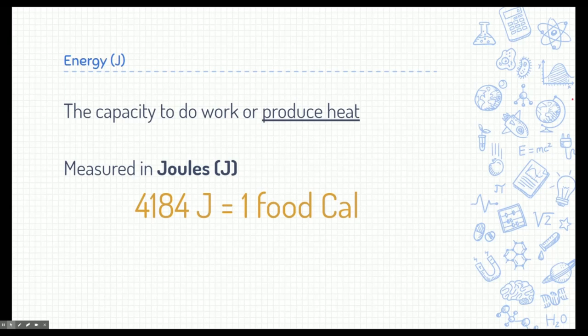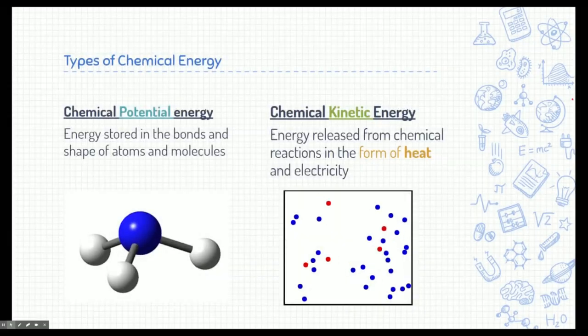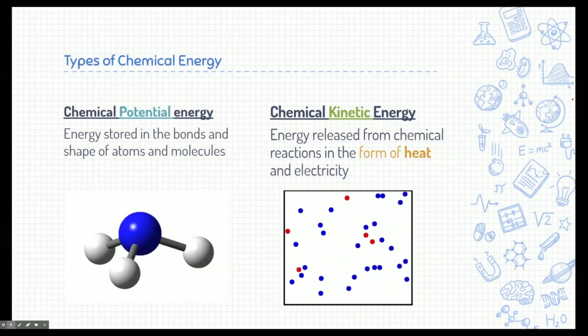You might not be familiar with joules as much as a different unit that's directly related to it — and that's calories. Anytime you eat food, you can look at the nutritional facts and it's written in calories. Calories is directly related to joules because it's just a unit of energy. There are 4,184 joules for every food calorie that you see on a nutritional label.